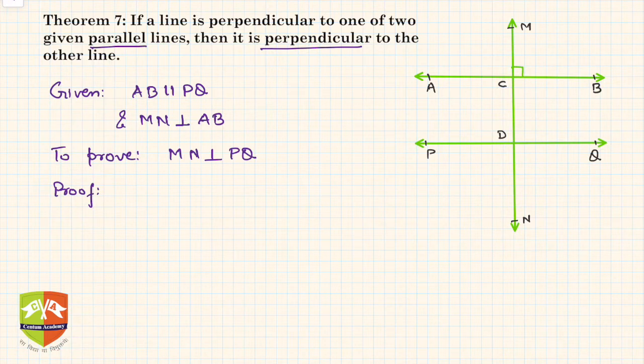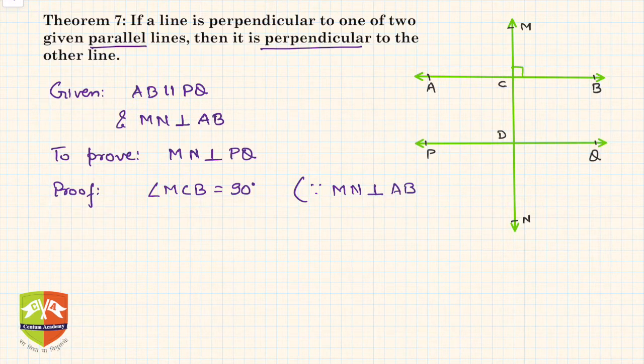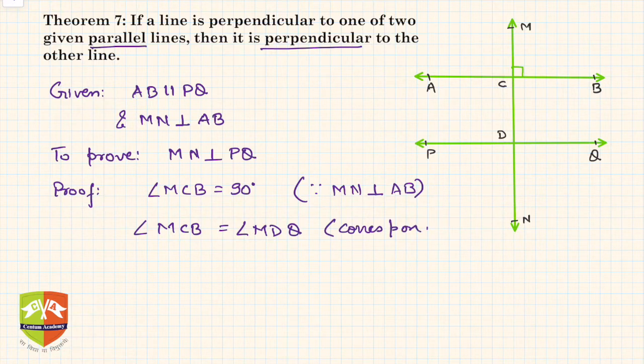So hence, angle MCB is equal to 90 degrees. Why? Because MN is perpendicular to AB. And angle MCB is equal to angle MDQ. Why? Because corresponding angles.